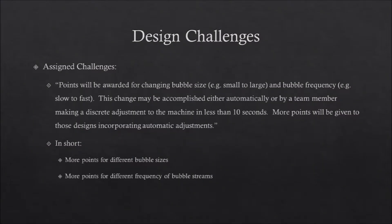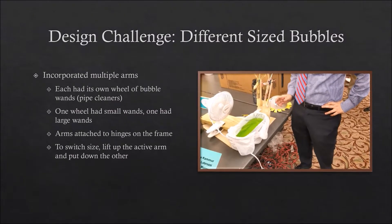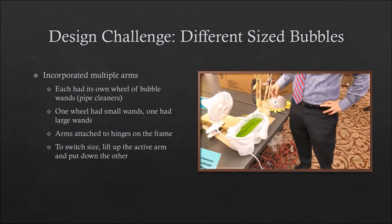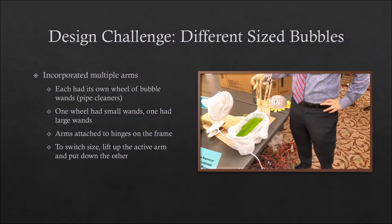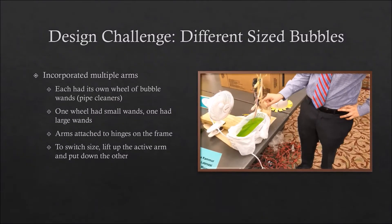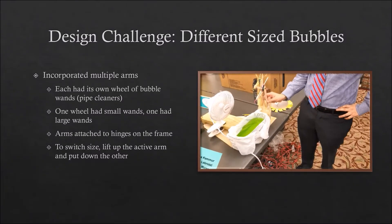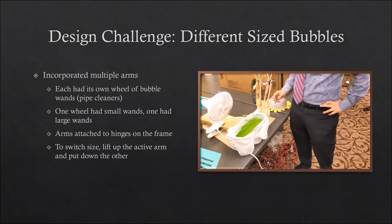Hello, I am Julian, and I will be talking about our design challenges. Along with other restrictions given to us, we were given two challenges: our machine had to change both the size and the frequency of the bubbles. When pondering the first question, we came up with the idea of using multiple wheels of bubble wands, each with different size wands. We had to come up with a way of switching out one wheel for the other. We decided it was best to move the wands by rotating them on a hinge up and down to select which wand we needed at that moment. This can be seen in both the prototype and the final model.